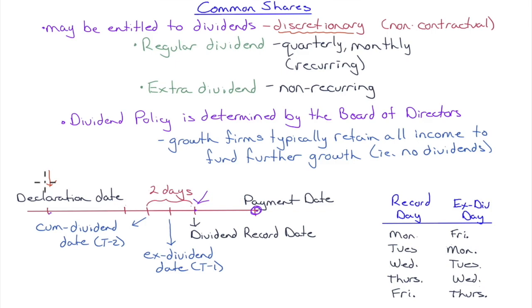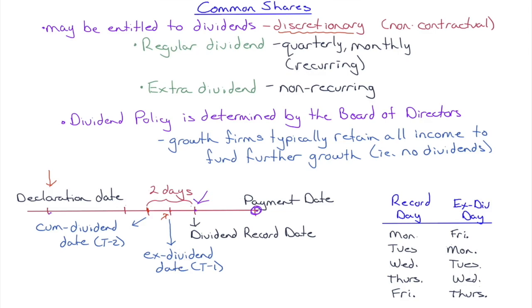To be a shareholder of record on the dividend record date, you must account for a two-day settlement period — meaning you must buy shares before the close of business two days before the record date. That's the cum dividend date: the stock is still trading with the dividend attached. The next day is the ex-dividend date — if you buy on that day, you don't get the dividend. But if you owned the stock on the cum dividend date and sell on the ex-dividend date, you still receive the dividend.